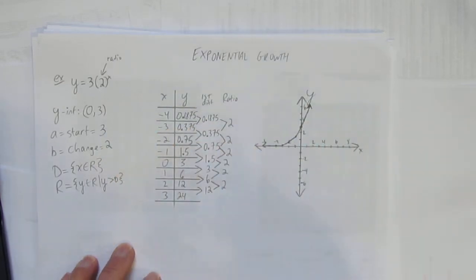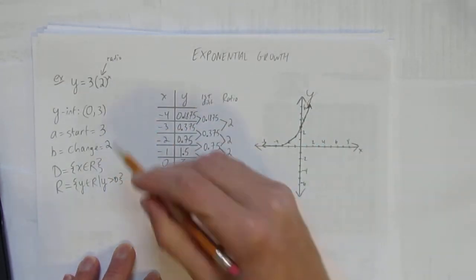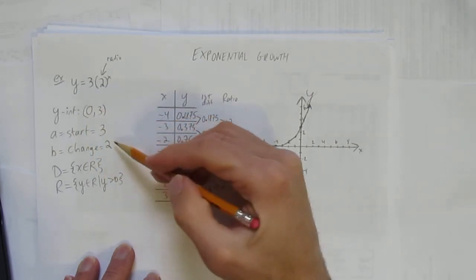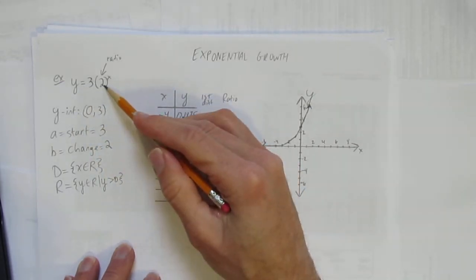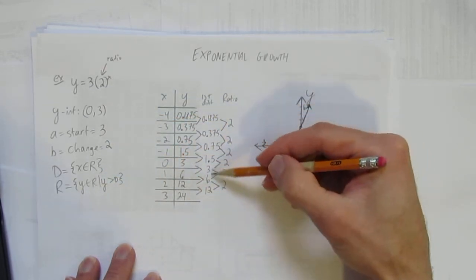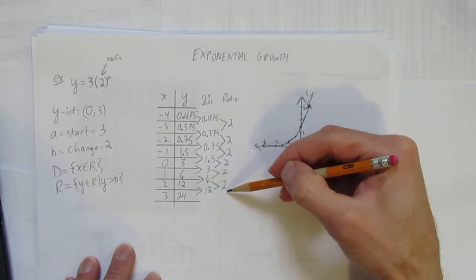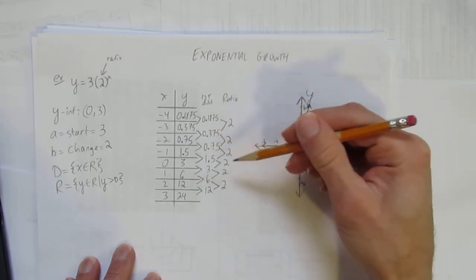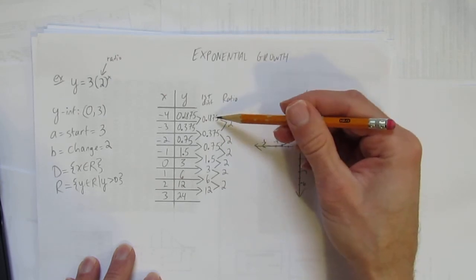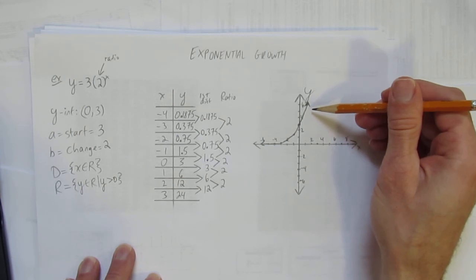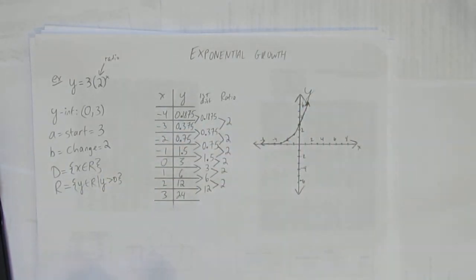And we've done it. We've looked at exponential growth. We were given an equation and we identified the y-intercept, the start value, and the change or ratio. Then before we did domain or range, we made a table and calculated the first differences and the ratio. When we did that, that was just for observation—it's a thing I often ask on tests. What we really needed to do was graph it using the x and y values. So we graphed it, and once graphed, we easily identified the domain and the range.